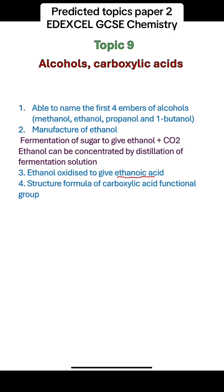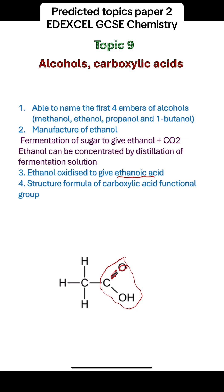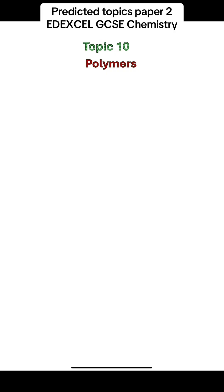The structural formula of carboxylic acids and their functional group: the functional group of a carboxylic acid is a carbon with a double bond to oxygen and a single bond to an OH group. You should know all the acid properties of carboxylic acids, as they are typical acids with typical acid properties.